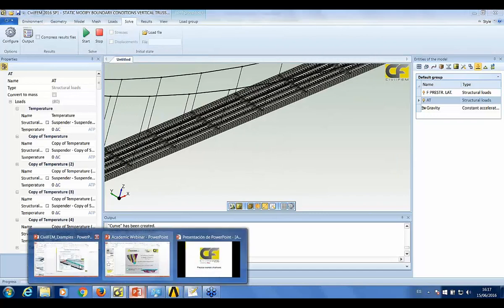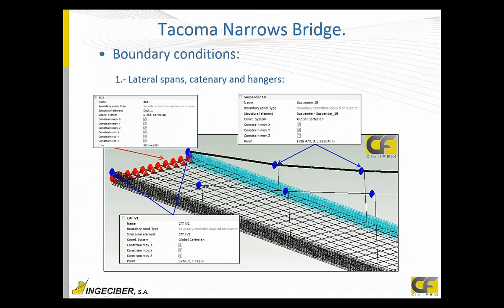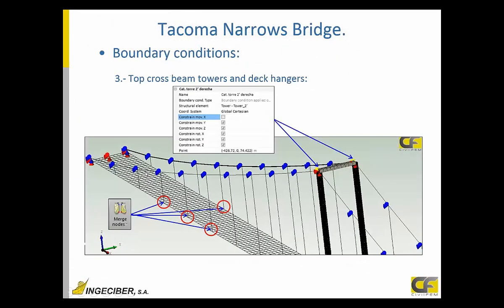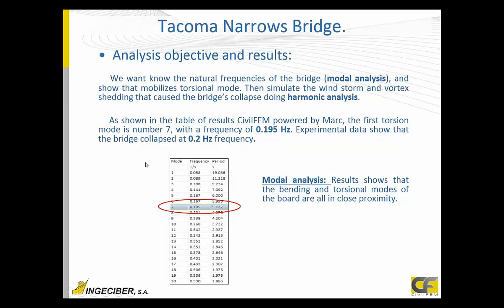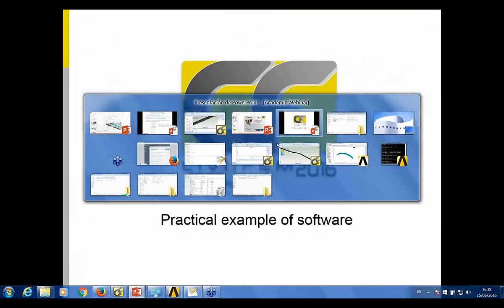After the structural analysis, we want to perform a modal analysis to see exactly what was happening with this bridge. We want to analyze the first torsion mode. In this case, it corresponds to mode number seven of vibration, with a frequency value of 0.195 Hz, which matches very well to the experimental data recorded when the bridge collapsed, which was approximately 0.2 Hz. We perform the modal analysis and can check all the modal shapes.